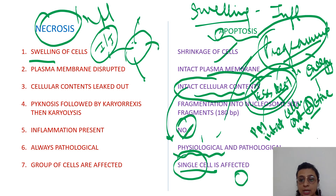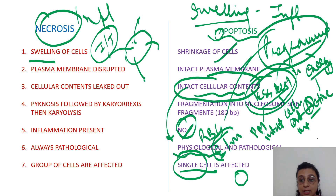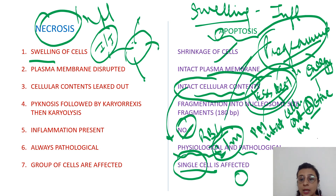For example, RBCs get destroyed after 120 days of lifespan. Every month, endometrial shedding occurs during menstruation. These are physiological examples, though apoptosis can be pathological as well, because everything is planned.